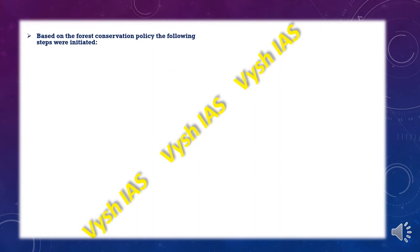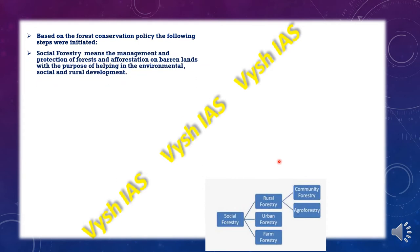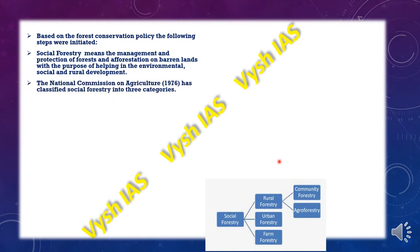Based on the forest conservation policy, several steps were taken to conserve forests. Social forestry is the management and protection of forests along with afforestation of barren lands to help environmental, social and rural development. The National Commission of Agriculture, established in 1976, classified social forestry into three categories: farm, urban and rural forestry.